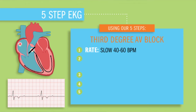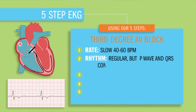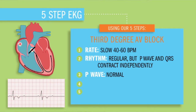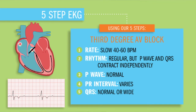The rate is going to be slow, 40 to 60 beats per minute. The rhythm is going to be regular, but P waves and QRSs are contracting independently. The P wave is upright and normal duration. The PR interval varies — this is huge and very crucial. The QRS may be normal or wide, basically greater than three mini boxes.